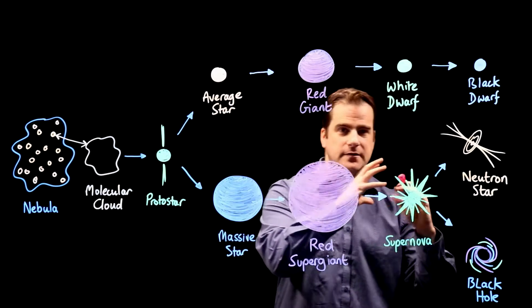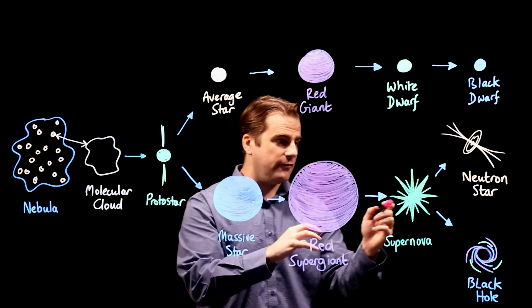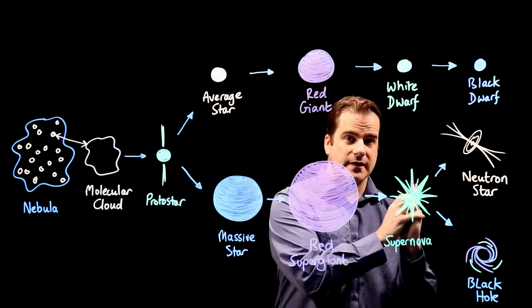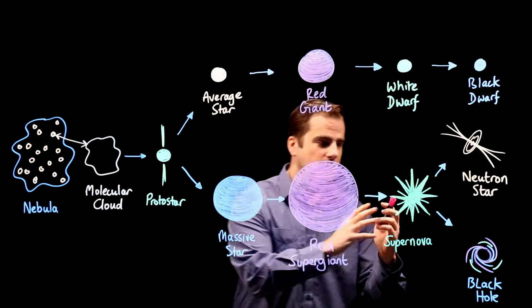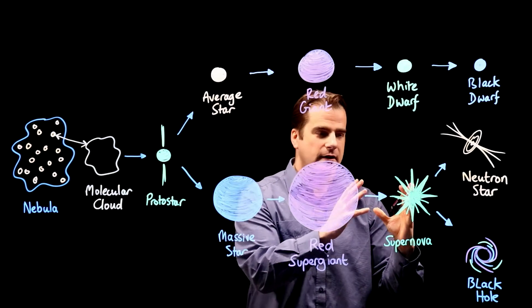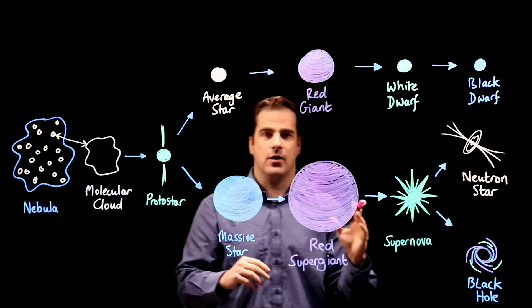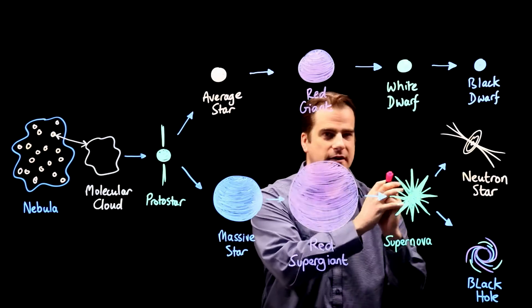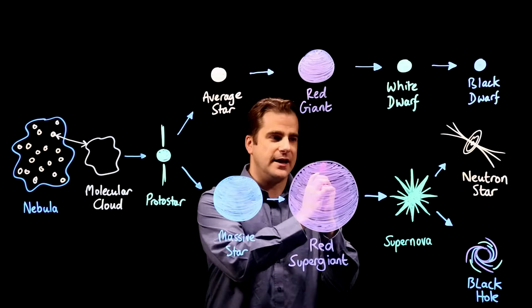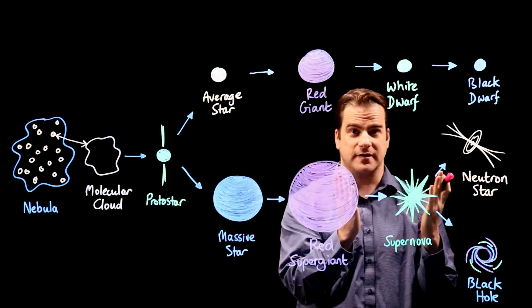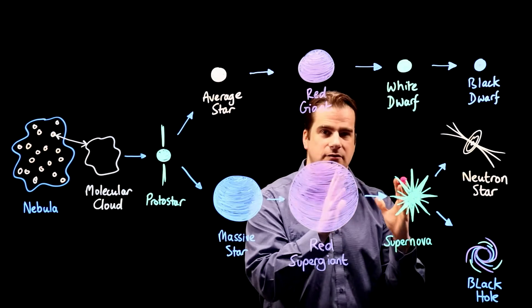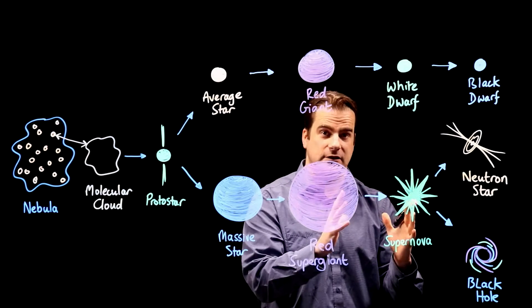And that's when there's so much material left after the supernova explosion, it collapses under its own gravity to form a singularity. And a singularity at the center of a black hole is when all of that matter has been condensed and crushed to an infinitely dense point, and that's called a singularity. And it has an extremely strong gravitational field.